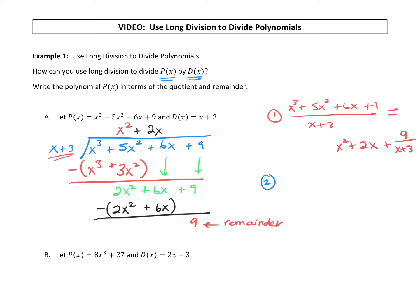The second way to represent our answer is to say that x³ plus 5x² plus 6x plus 9 equals the product of x² plus 2x times the divisor x plus 3, plus the remainder 9. Both of those are acceptable ways to write the answer.